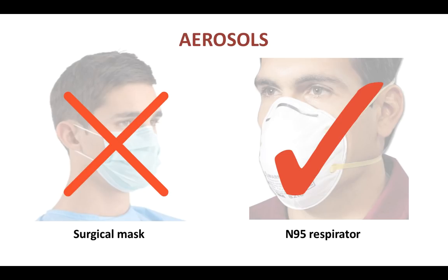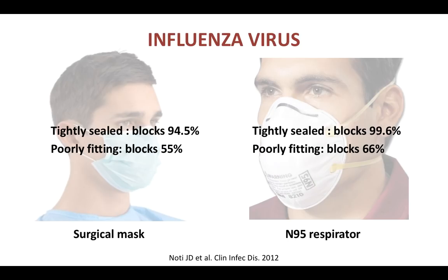But when we say better, there is not a huge difference. The N95 respirator is the gold standard — for example, a properly worn N95 respirator blocks 99.6% of all viruses. On the other hand, a surgical mask is still pretty good; it blocks almost 95% of viruses. So it's just slightly less efficacious compared to an N95 mask.